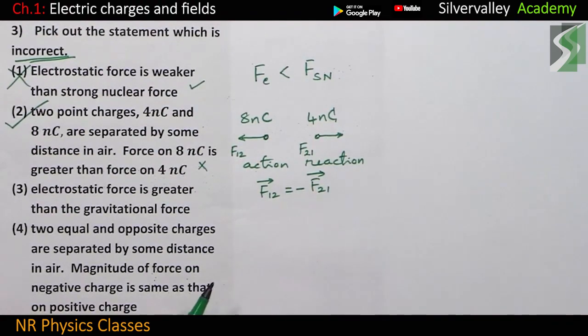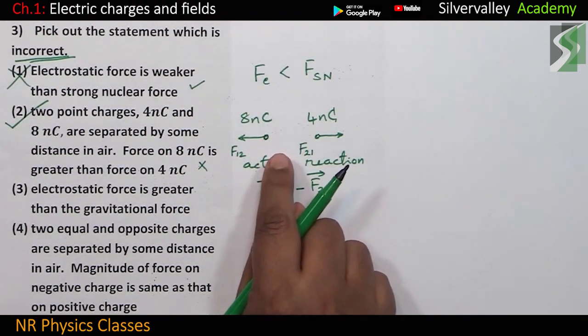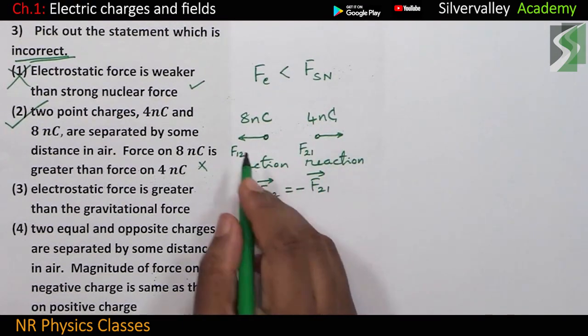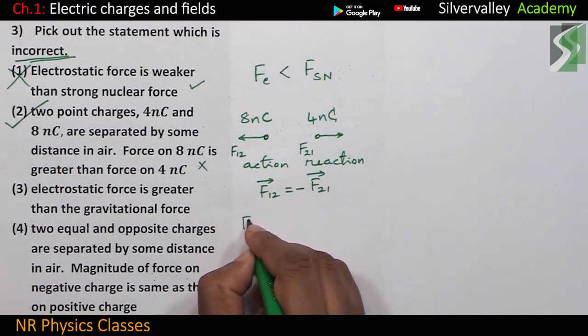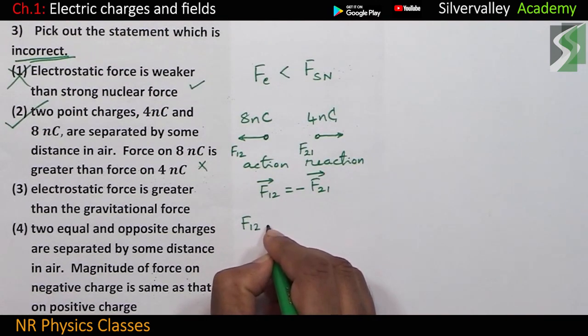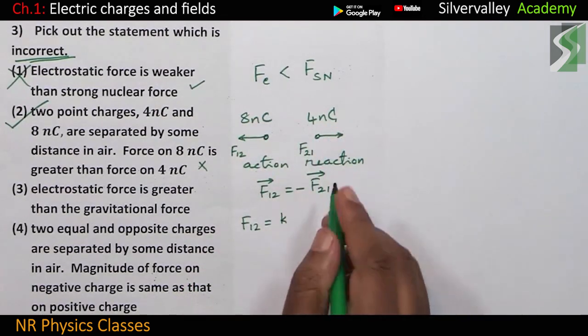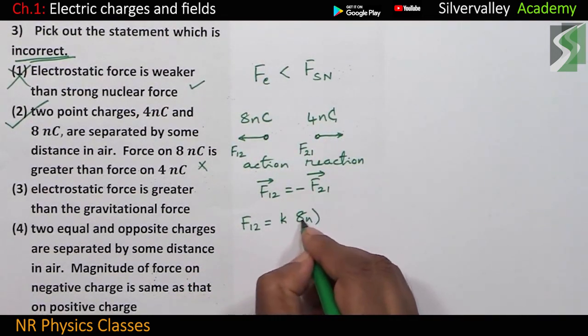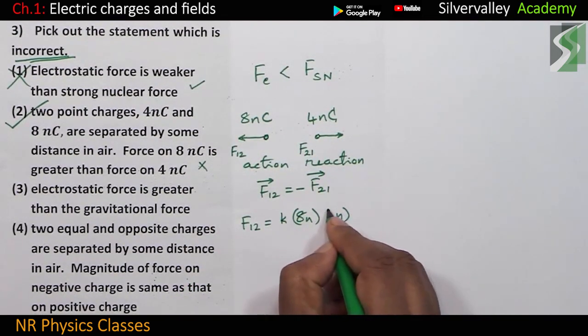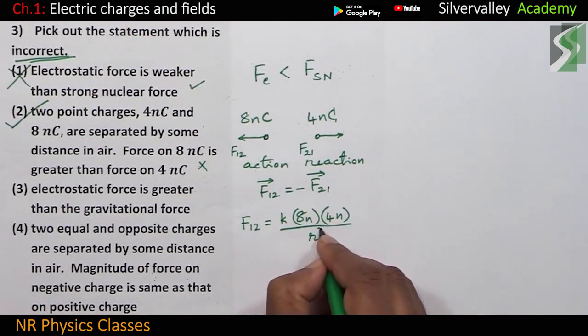Okay. If it is not clear to you, let me explain a little bit. Let us find force on first charge due to second. Coulomb's law. Constant, product of the charges, 8 nano, 4 nano by R square, isn't it?